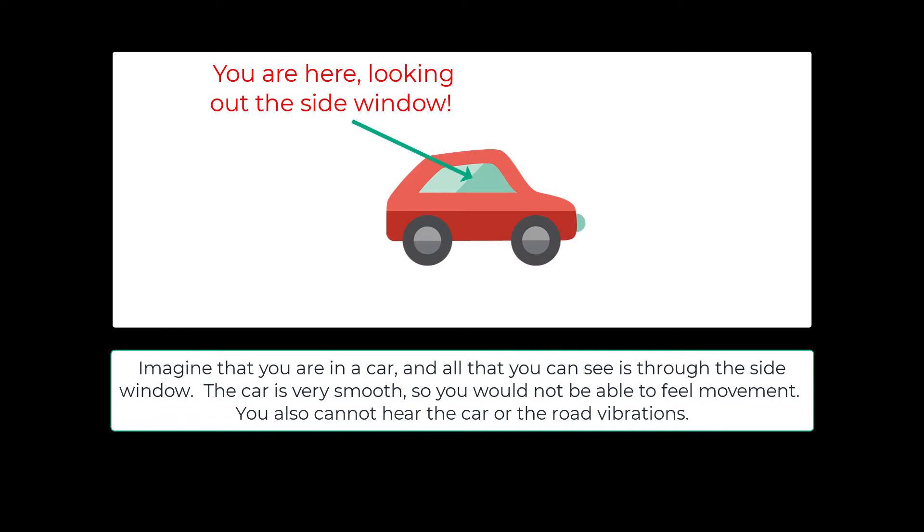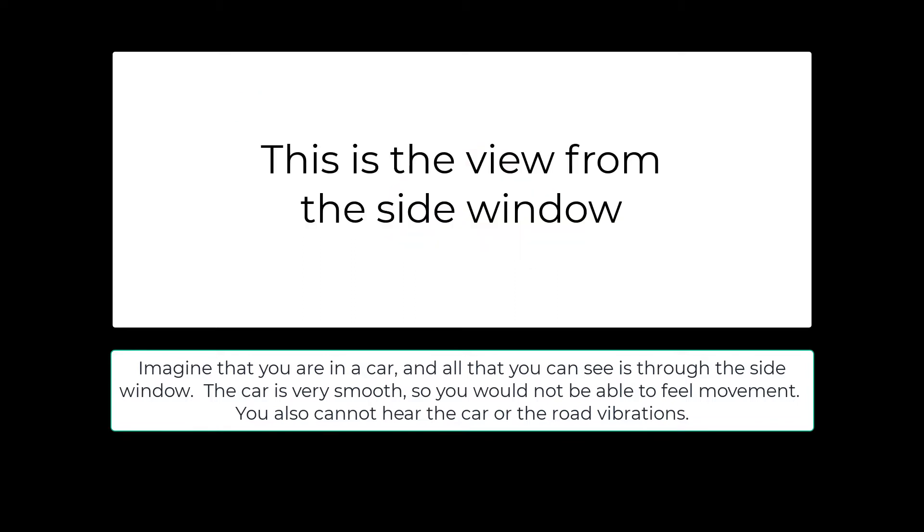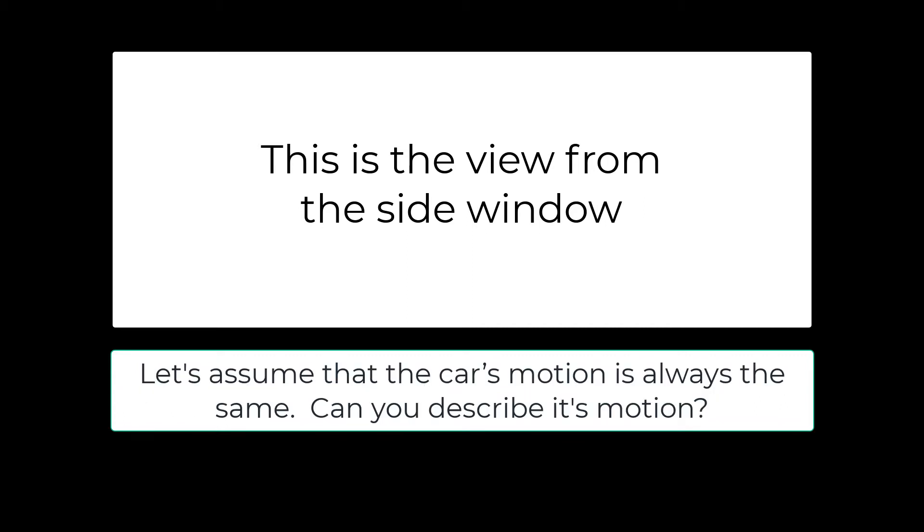Imagine that you're in a car and the only way that you can see out of the car is through the side window. The car is very smooth, so you'll not be able to feel the movement of the car and you won't be able to hear the car or the road vibrations. So that top part of the screen is the side view window and that's what you're going to be able to see.